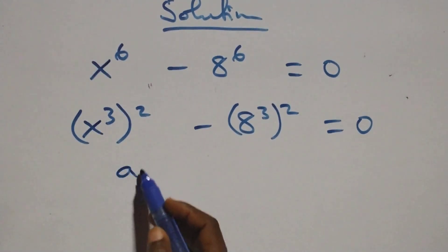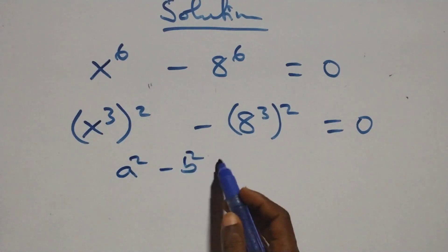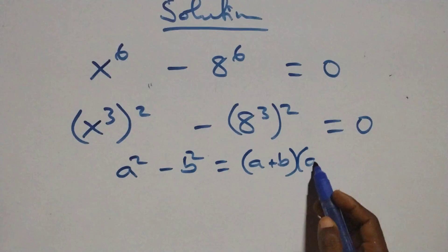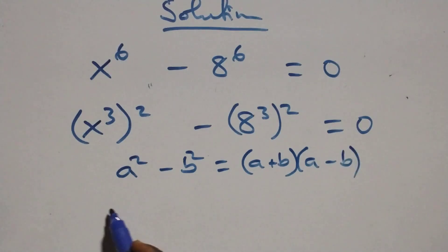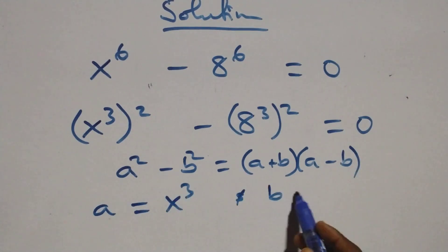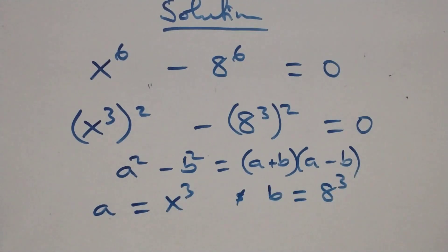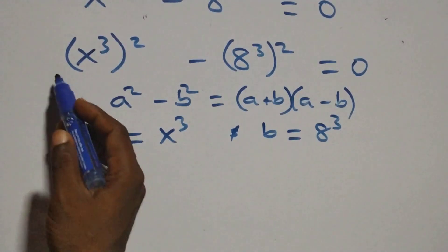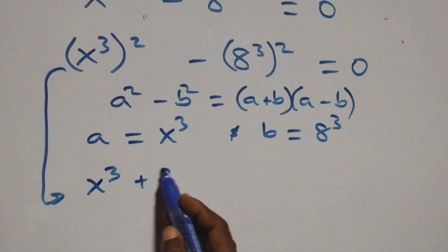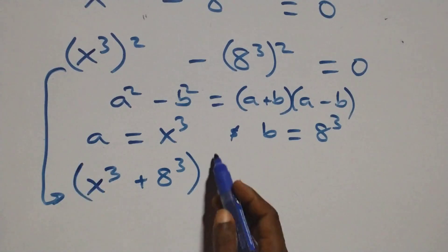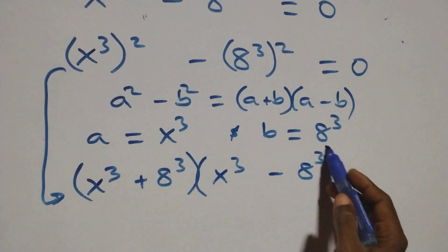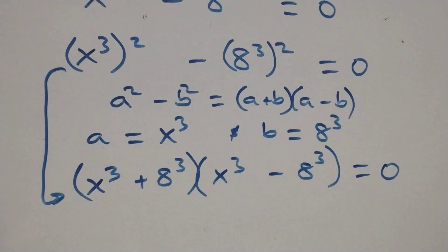Then next step, we can write this as x raised to the power 3 raised to the power 2, since 2 times 3 equals 6, minus a raised to the power 3 raised to the power 2, then equals to 0. This follows the form a squared minus b squared, which can be written as a plus b into brackets, times a minus b, where a stands as x raised to the power 3 and b stands as a raised to the power 3. That is, we can write this as x raised to the power 3 plus a raised to the power 3, times x raised to the power 3 minus a raised to the power 3, equals to 0.